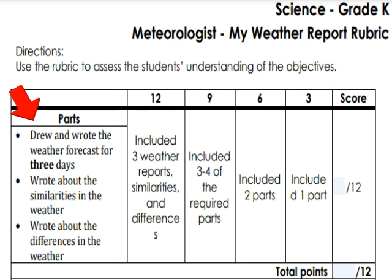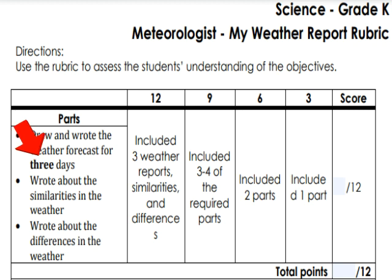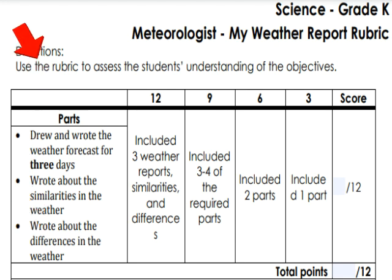Right here under Parts, it says: I drew and wrote the weather forecast for three days. Now don't worry, this project isn't going to take three days. You're going to write about the weather today that we know for sure, then look up a weather forecast or predictions for the next two days. I also wrote about the similarities — the way things are the same in the weather — and the differences — the way things are different. If I do all of these things, I'll get a really awesome grade. We have a packet we can print out so we don't miss anything.